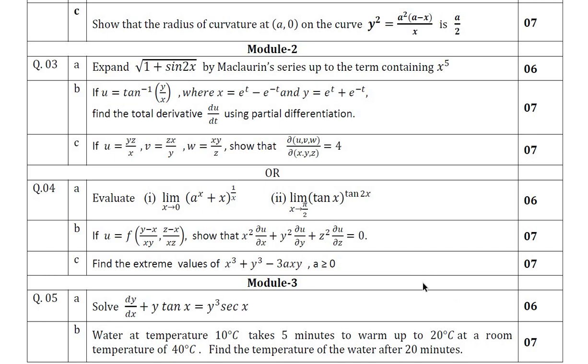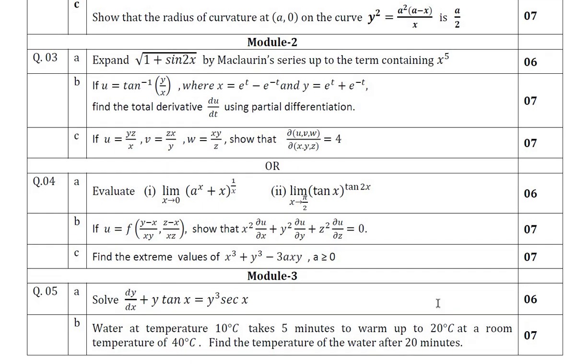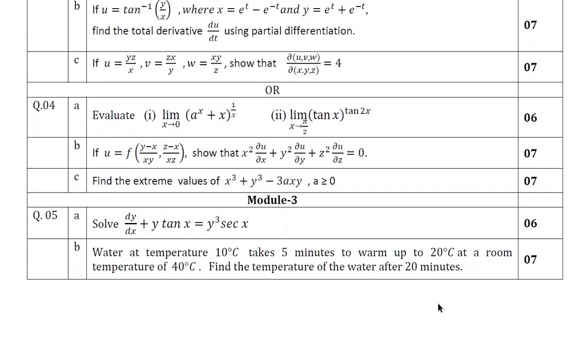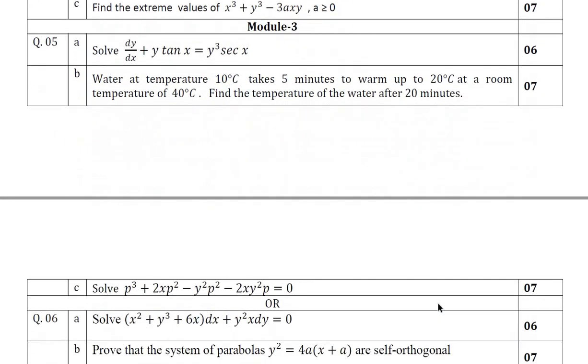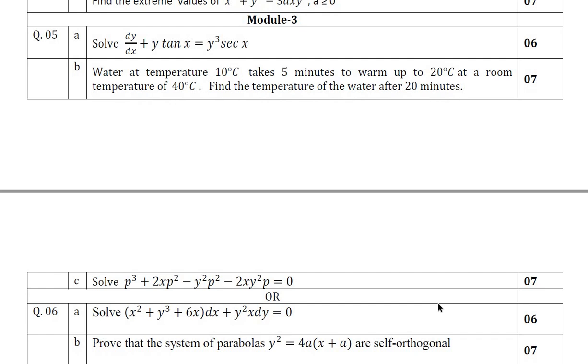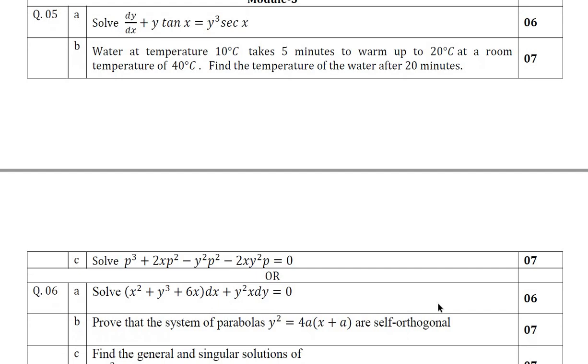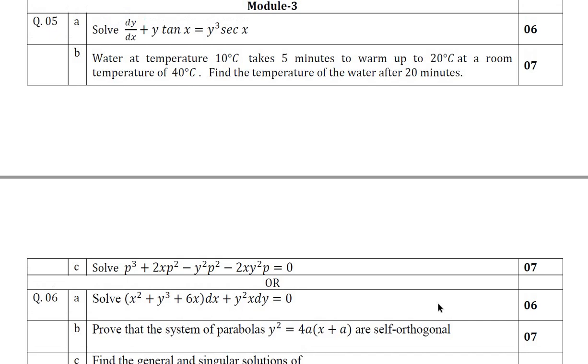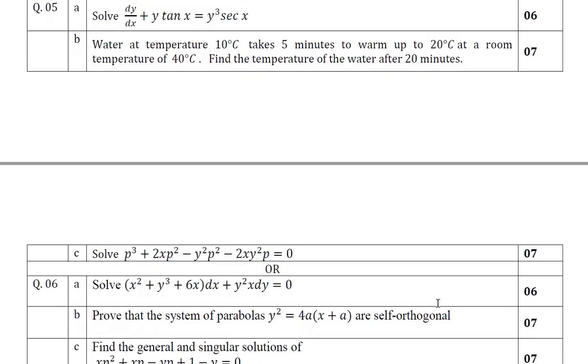If I go for module 3, question number 5 and 6, you should answer either from 5 and 6, either 5 or 6. Module 3 is ordinary differential equations of first order. Here you have compulsory parts as Newton's law of cooling, exact differential equation, solvable for P, orthogonal trajectory, exact and reducible to exact. All these questions are compulsory part. Out of this you can choose any three questions.